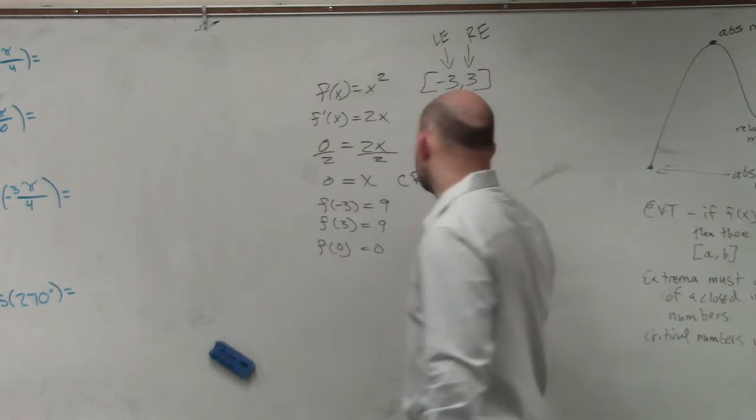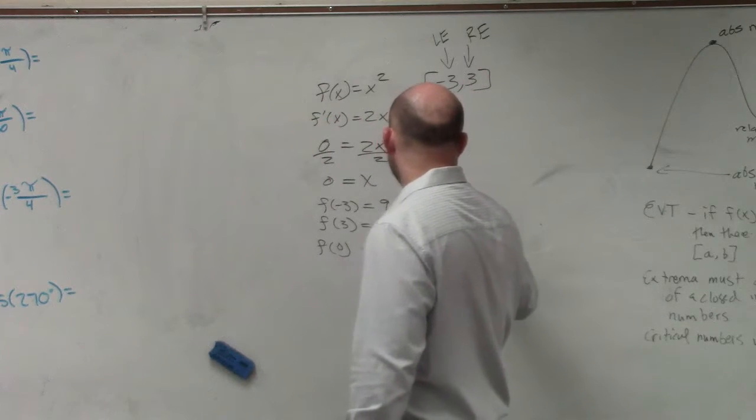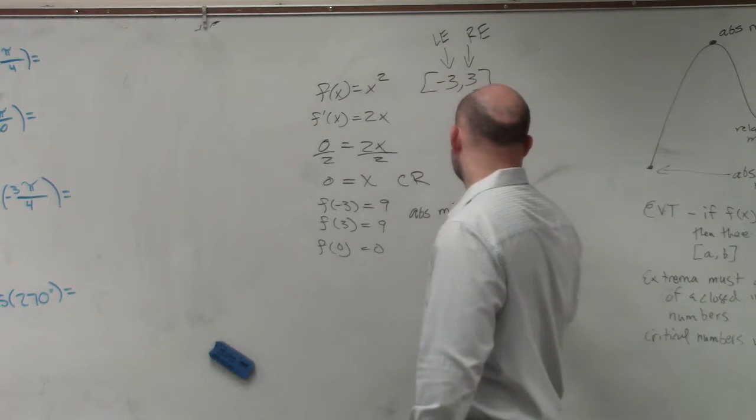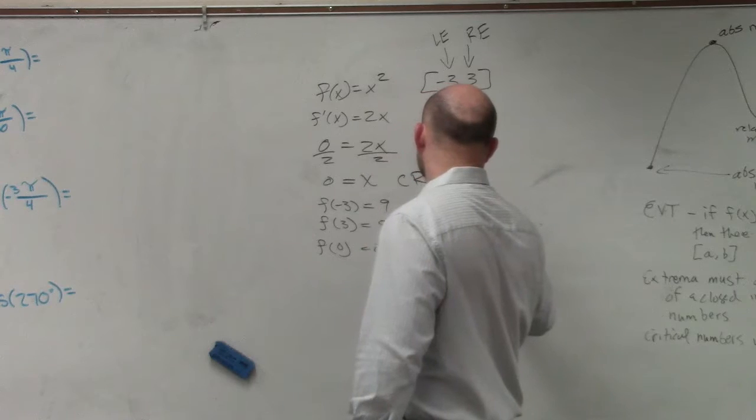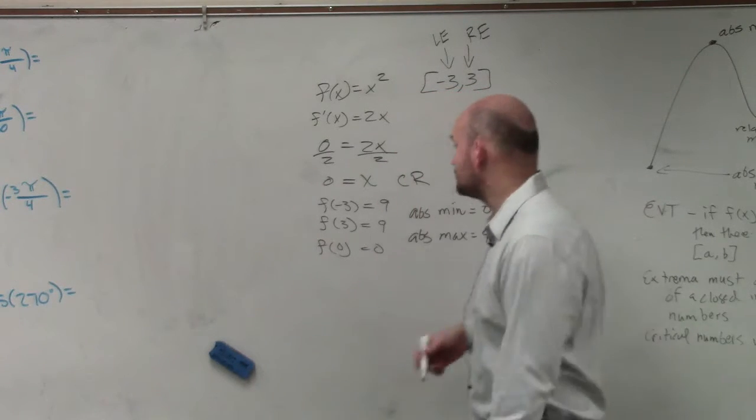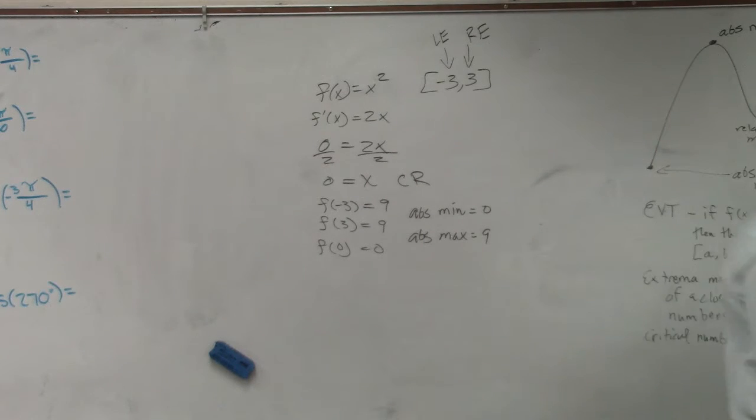So therefore, we can say our absolute min is equal to 0. And our absolute max is going to equal 9. You could also write them as coordinate points, where you'd have two absolute max. So you'd say our absolute max could be negative 3 comma 9 and 3 comma 9. And our absolute min would be 0 comma 0.